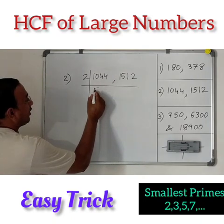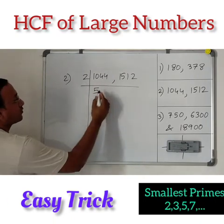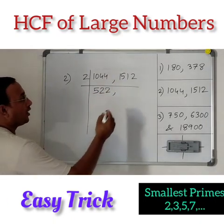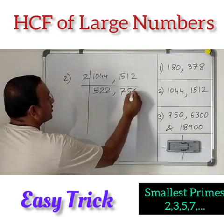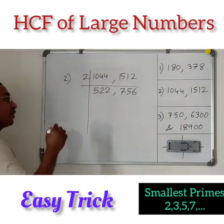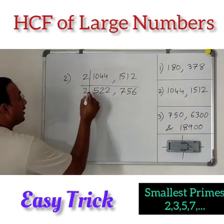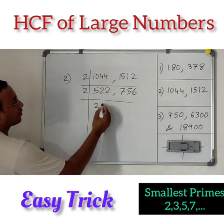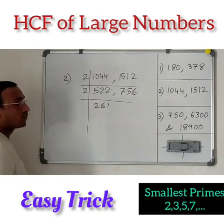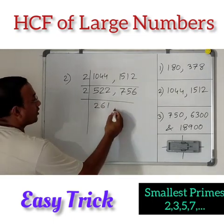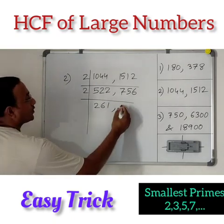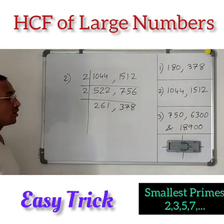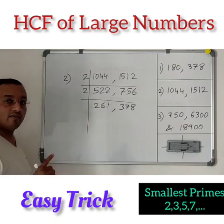Start dividing by 2. 1044 divided by 2 gives 522, and 1512 divided by 2 gives 756. Both are still even, so divide by 2 again: 522 divided by 2 gives 261, and 756 divided by 2 gives 378. Since 261 is odd we can't take 2, so let's go for 3.